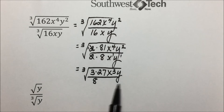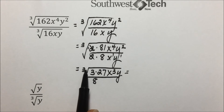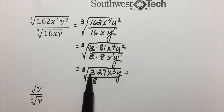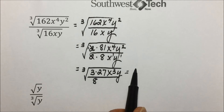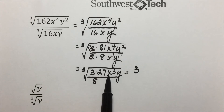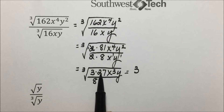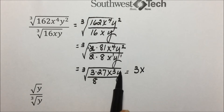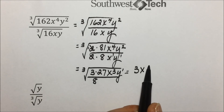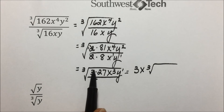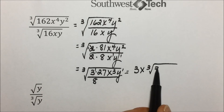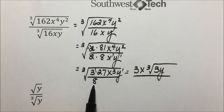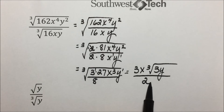Now we separate these, taking the cube root of the numerator. The cube root of 27 brings a 3 out from underneath the radical. The cube root of x to the 3rd — 3 divided by 3 — leaves us with x. There's only one y, so it remains underneath the radical. So we have 3 to the 1st power and y to the 1st power underneath the radical, and the cube root of 8 is 2. Our final answer is 3x∛(3y) over 2.